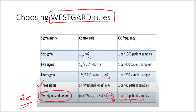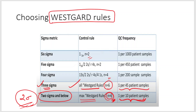For 3 sigma performance, on violation of any Westgard rule, you have to run 6 controls, but now in what frequency? 1 QC run per 45 patient samples, with 6 controls per run.